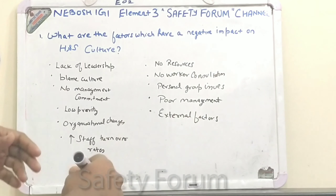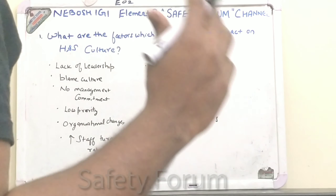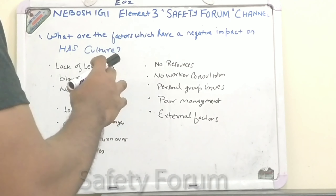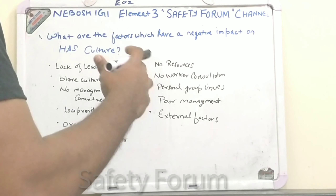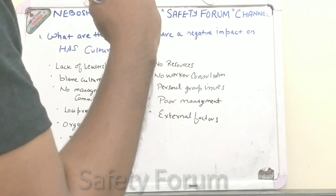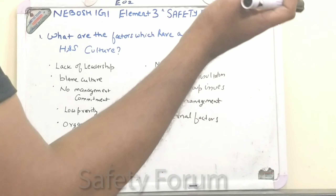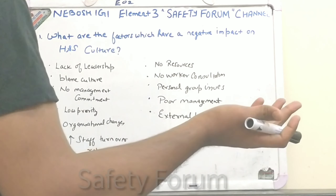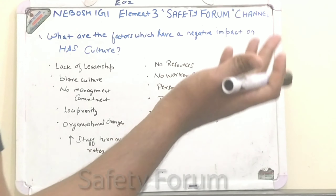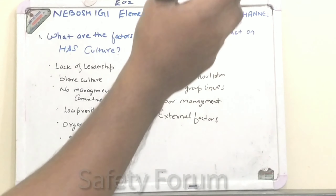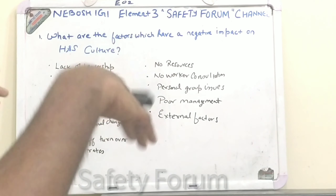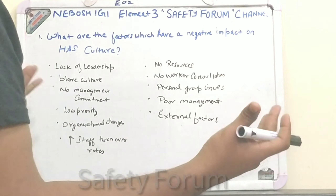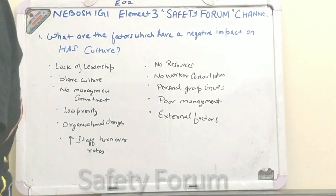Then we have external factors. These include things like economic climate changes, which can result in difficult operating conditions. Similarly, if external factors like the rules and regulations of the local government body change, all of this will create a negative impact on the health and safety culture.